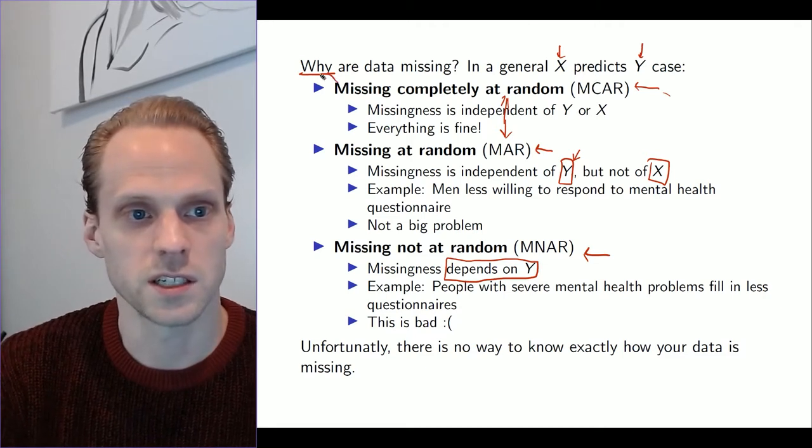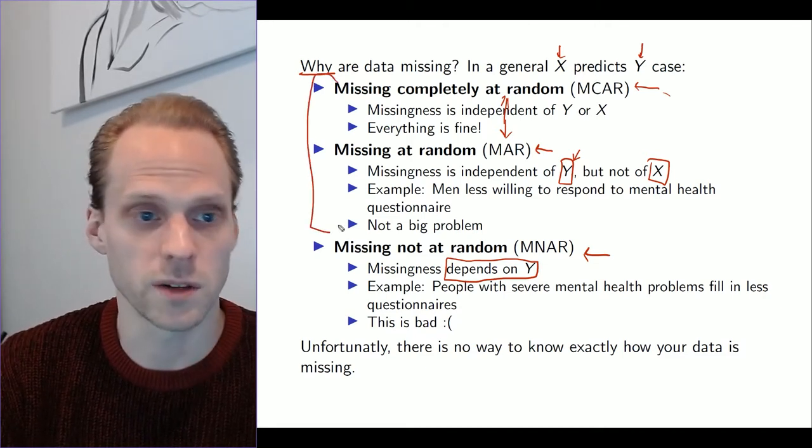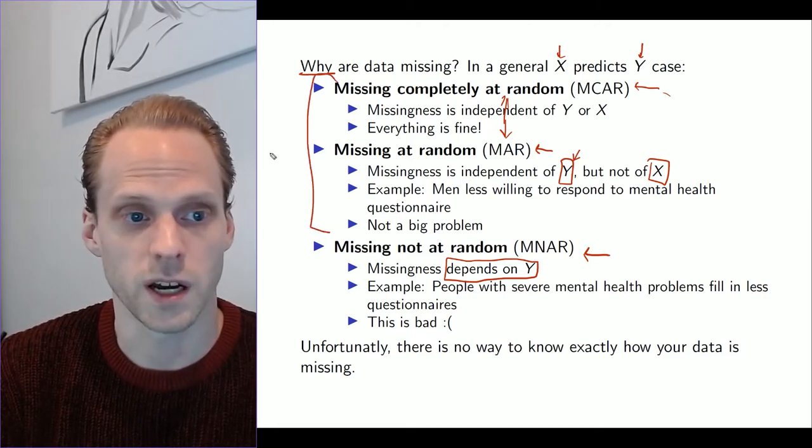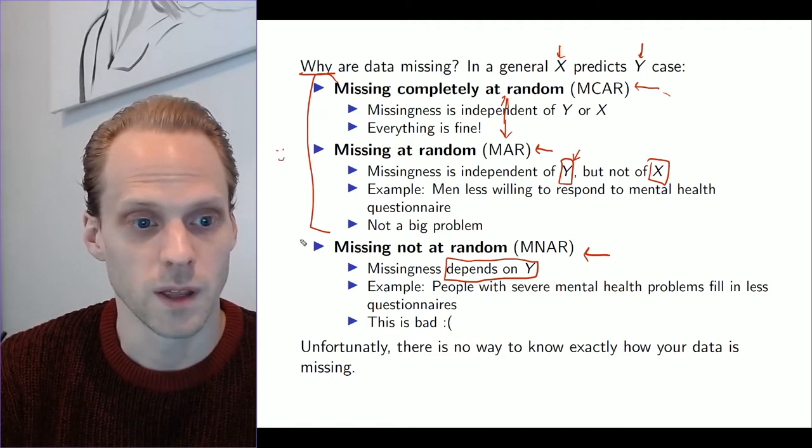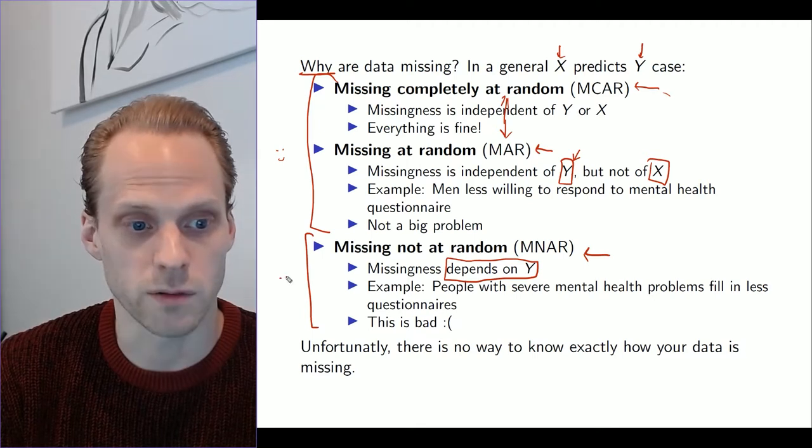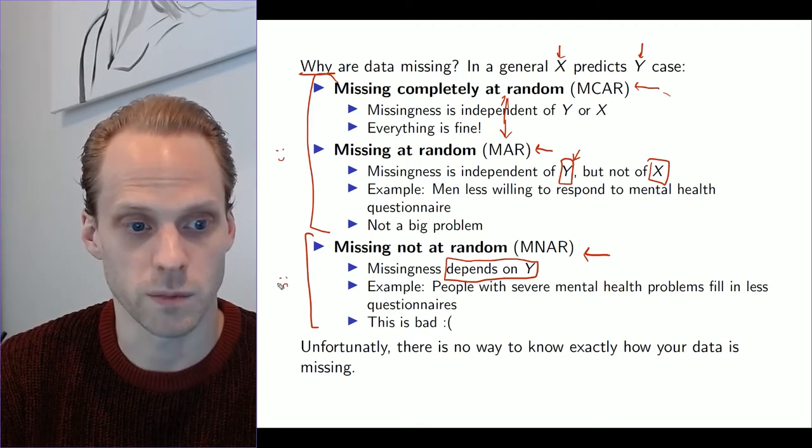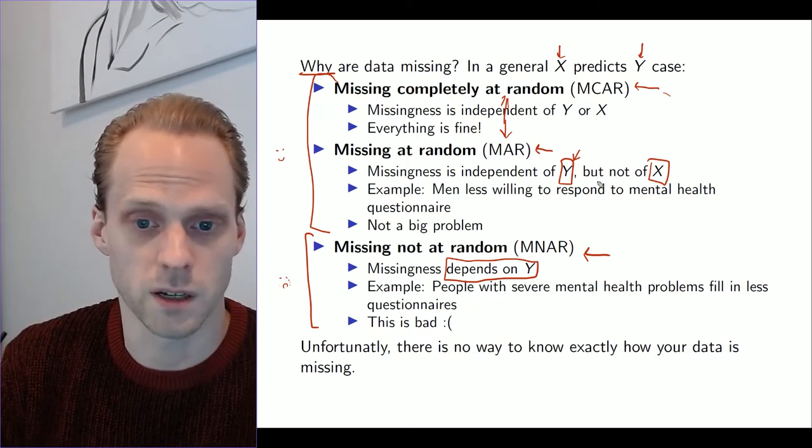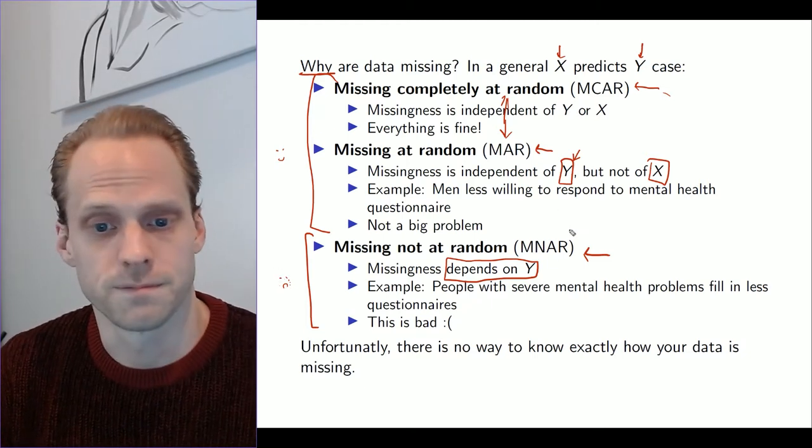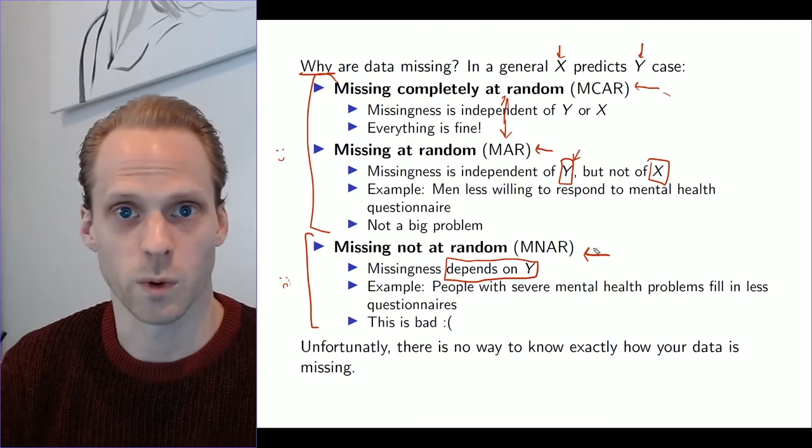In these cases here, the missing at random and the missing completely at random, this is fine. You can handle this. This is good, we're happy. But here with MNAR, this is bad. We're unhappy, we're very unhappy, we're even crying, because this is really bad. I'll show it in the next slide why it's bad.